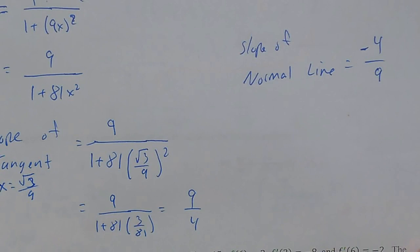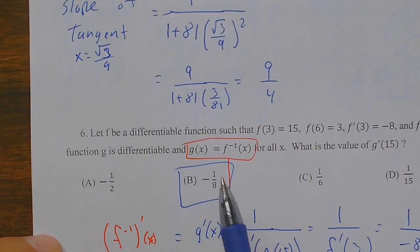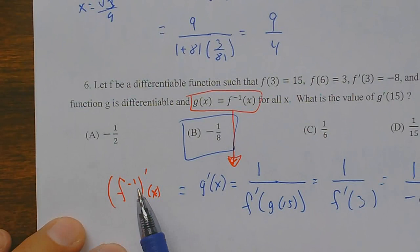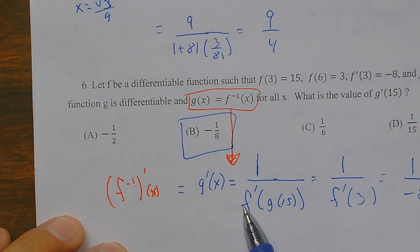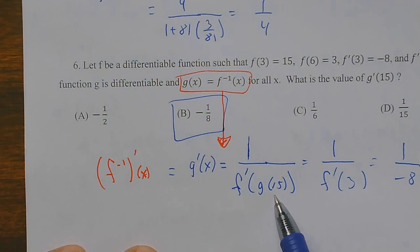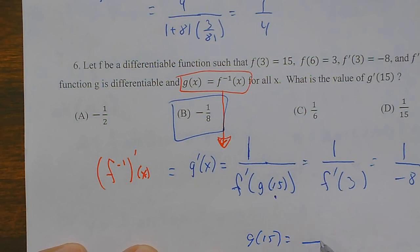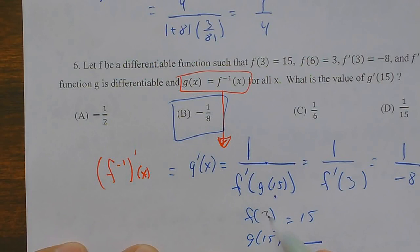Number six asks for the derivative of the inverse. Because g is the inverse of f, finding the derivative of the inverse of f is the same as finding the derivative of g. The setup is: one over the derivative of the original evaluated at the inverse at 15. To find the inverse at 15, I look at when f equals 15 — that's f of 3 equals 15, so g of 15 is 3.